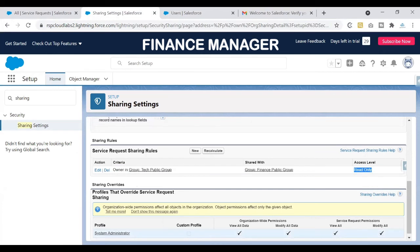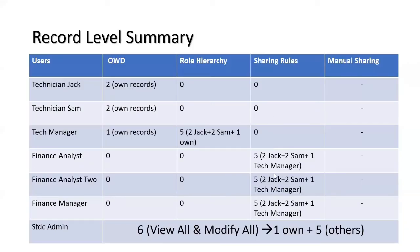Going back to the summary table in the presentation, everything makes sense now. From sharing rules: Tech Jack gets no extra records, Tech Sam gets no extra records. Finance Analyst can see five records, Finance Analyst 2 can also see five records — both validated. The Finance Manager also sees five records. Now let's verify Tech Jack, Tech Sam, and Tech Manager to confirm they aren't getting extra records from sharing rules.